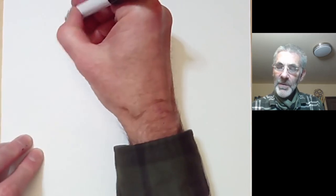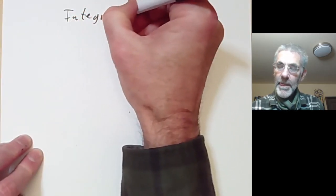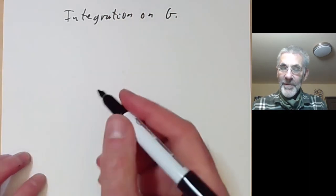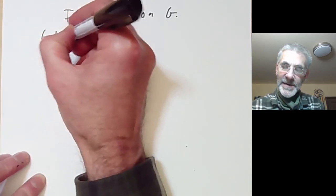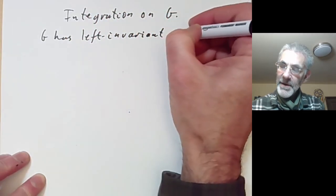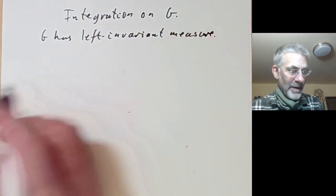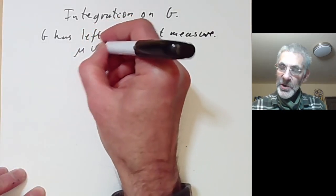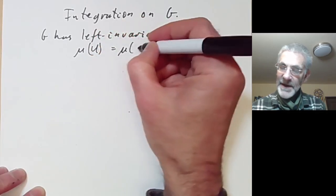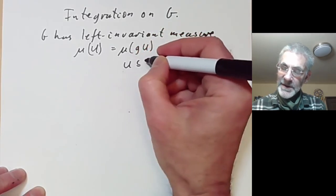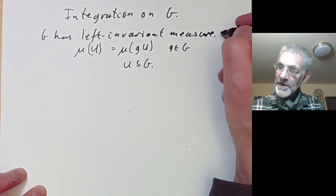This lecture is part of an online course on Lie groups and will be about integration on a Lie group G. The basic result about integration is that G has a left invariant measure, meaning that if you take the measure of a set U, this is equal to the measure of the set g times U whenever g is in G. Here U is an open subset of G and mu is a measure.